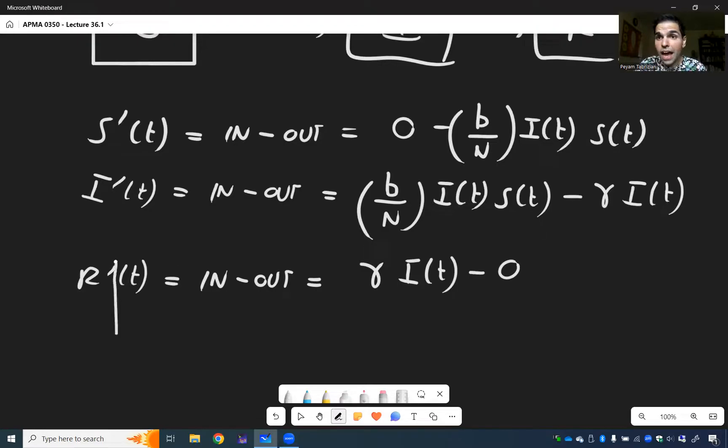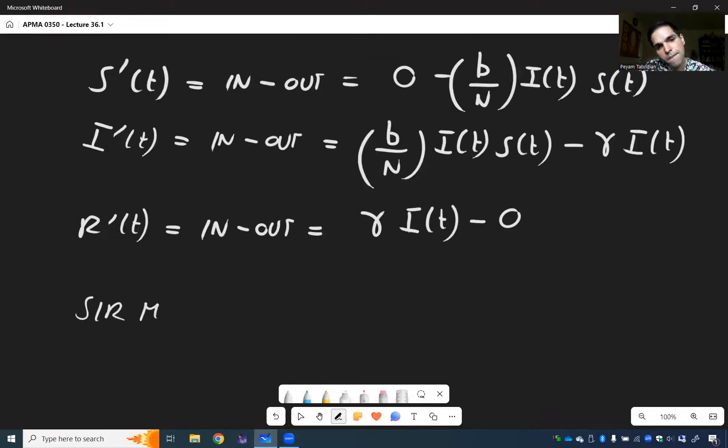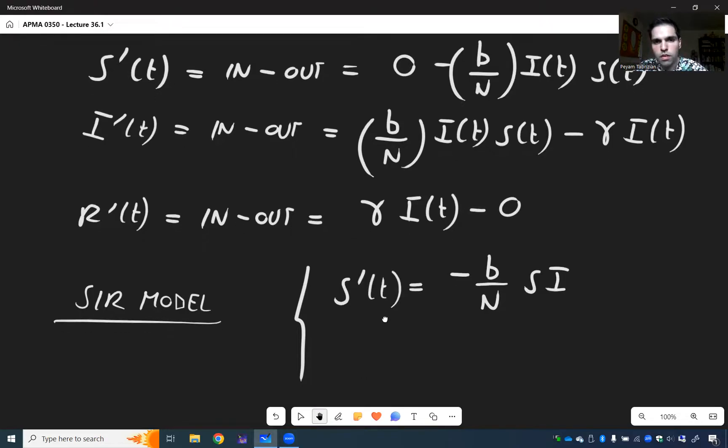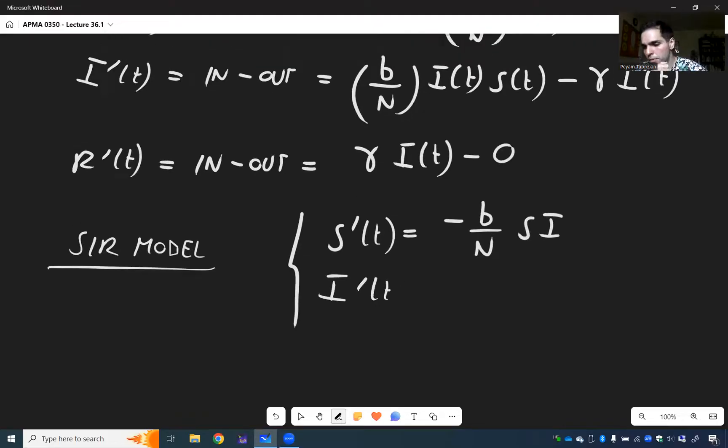So in the end, we have our SIR model, which is simply S prime of t is minus B over N S I. I prime of t, that's B over N S I minus gamma I. And finally, R prime of t equals gamma I. So that's the model we start with.